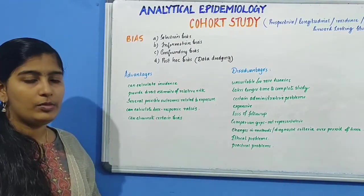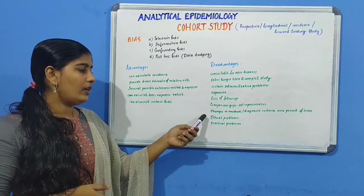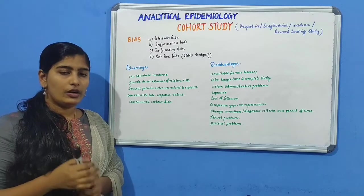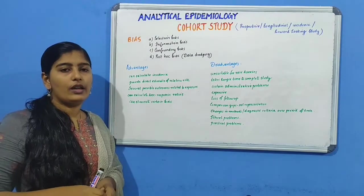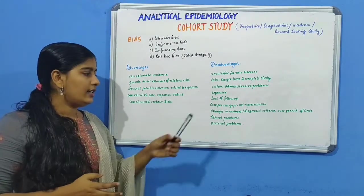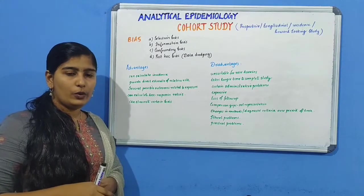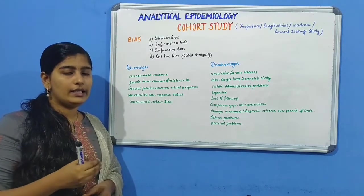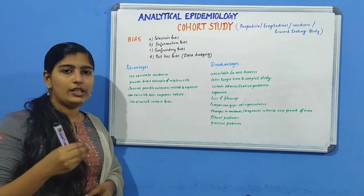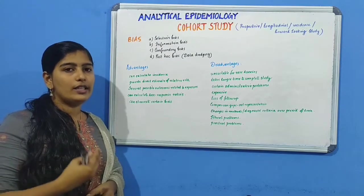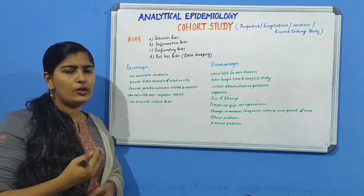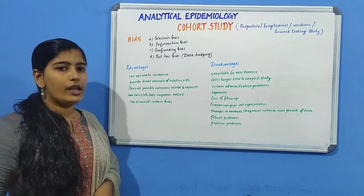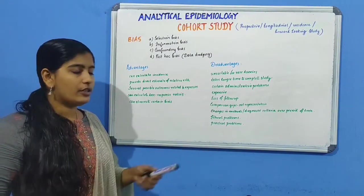There may also be changes in methods or diagnostic criteria over a longer period of time. There may be ethical problems — unlike case control study, cohort study is prospective, meaning even after obtaining evidence about an implicating factor in the etiology of a disease, you are not intervening or trying to reduce occurrence of the disease, which poses major ethical problems. And finally, there may be practical considerations.